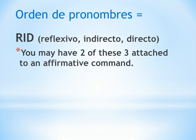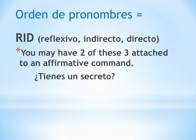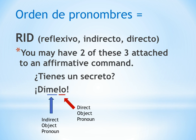You could have two or just one of these three pronouns attached to an affirmative command. But remember that in negative commands the pronouns always come in front. We might say, ¿Tienes un secreto? And then the person could say, entonces, dímelo — tell me it. Here the indirect object pronoun is the me, tell it to me, and the direct object pronoun is the lo. So you're going to remember that you put the me before the lo, because the indirect comes before the direct object pronoun.